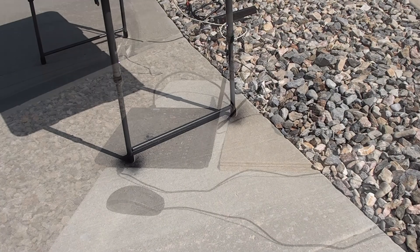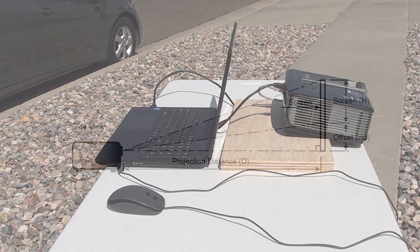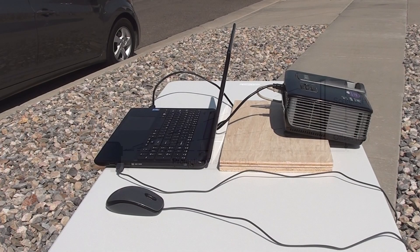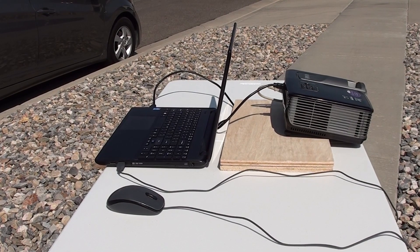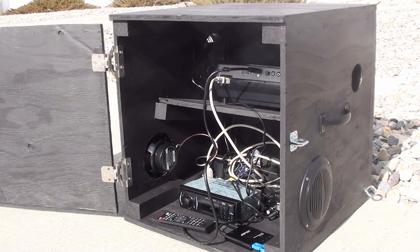Don't be surprised if you have to put something under the back legs of the projector to aim it down. Most projectors are designed to throw an image up onto a wall, but you're going to want to cover your house all the way to the ground. Here I'm using some spare boards to prop up the rear of the projector. Our projector box comes with a tilted shelf inside, so you won't have to worry about it.